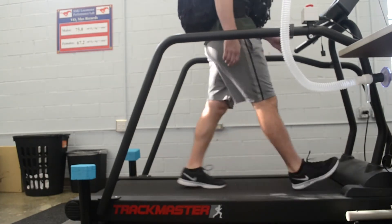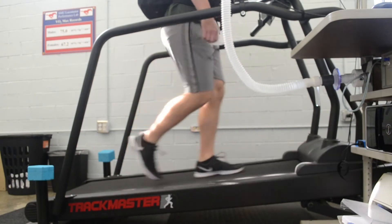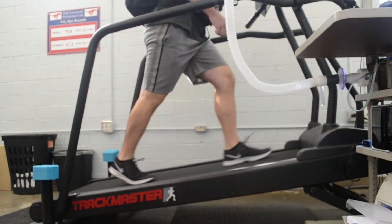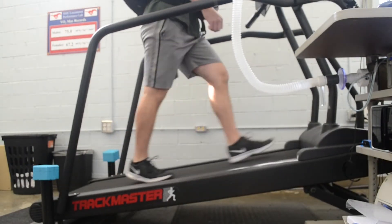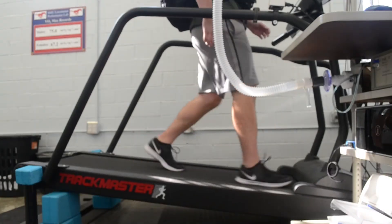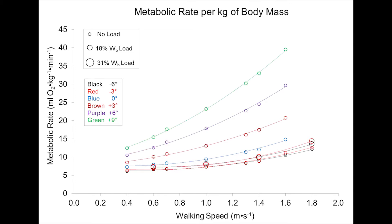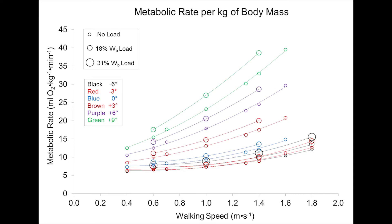Under 90 different speed, grade, and load conditions, we found that walking metabolic rates expressed per kilogram body mass increased with speed on all six grades examined, and the metabolic rates increased in direct proportion to the 18% and 31% body weight loads.